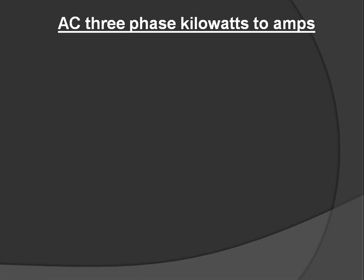The second one is kilowatts to amperes in AC three phase. The formula is I equals 1000 multiplied by P, divided by root three times PF times V.